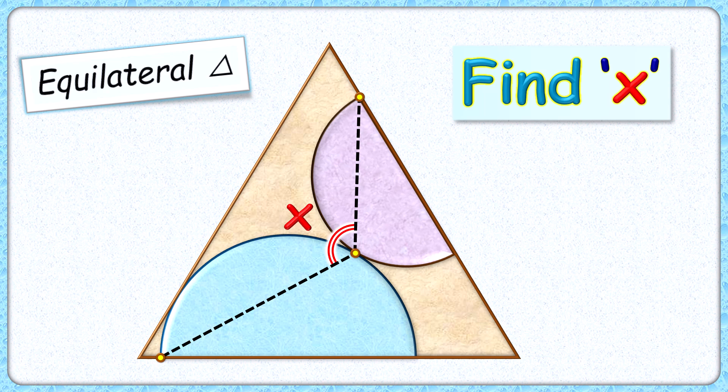Welcome everyone. This interesting question given is an equilateral triangle with two semi-circles inside it such that their diameters are aligned with the sides of the triangle and they are touching each other.